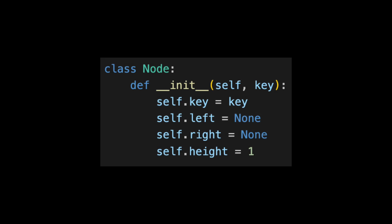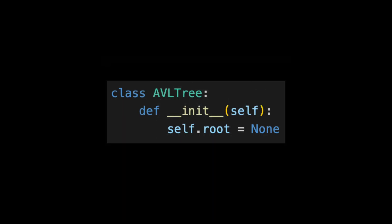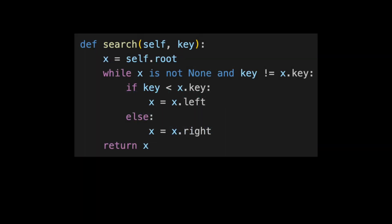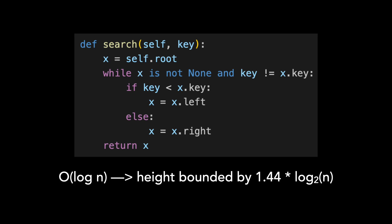Let's take a look at some code. For our nodes, we'll hold the data in an attribute called key. We maintain pointers to the left and right child, and we also store the node's height, which is set to 1 upon creation. For the tree, we'll keep track of a pointer to the root node. The search code is straightforward and is the same as for other binary search trees — I won't walk through it, so please pause the video if you'd like to review. Search has a time complexity of O(log n), as the height is bounded by 1.44 times log base 2 of n.